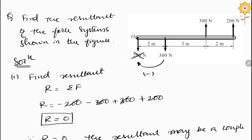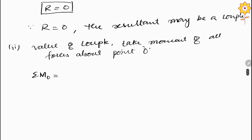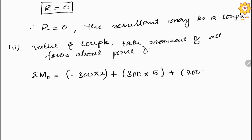The second force of 300 N acting upward makes an anticlockwise direction, so it is positive, and the distance from the origin is 5 meters. The third force acting upward also makes a positive contribution and the total distance is 5 plus 2 equals 7 meters. So the equation is: minus 300 × 2, plus 300 × 5, plus 200 × 7.